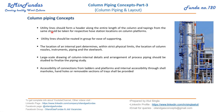Utility lines should form a header along the entire length of the column. Vertically, we try to route vertically downwards or vertically upwards — straight headers and tappings from those should be taken for respective host stations on each column platform. Utility lines should be routed in groups for ease of supporting.